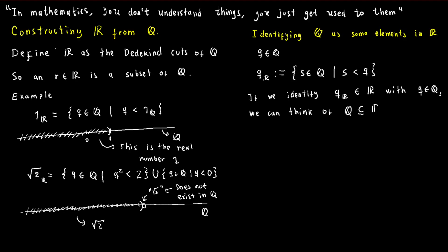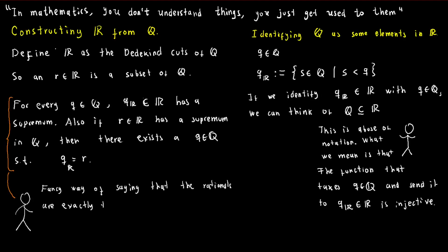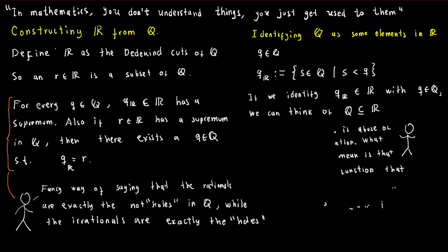It's worth noting that we can identify each rational number q with the set of all rational numbers smaller than q. With this identification, we can view the rational numbers as a subset of the real numbers. Additionally, we can observe that the rational numbers are exactly the Dedekind cuts that have a supremum in the rational numbers.